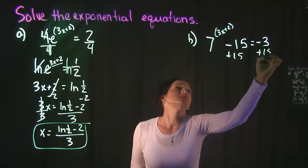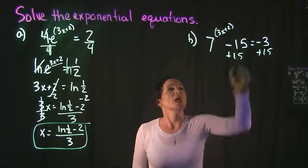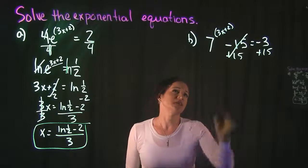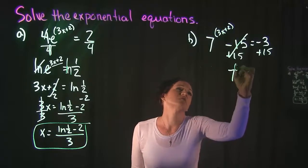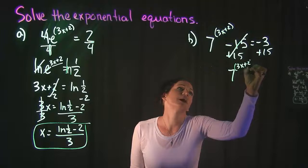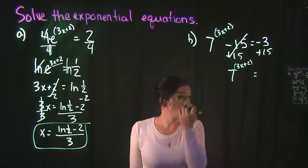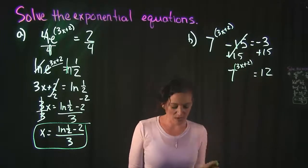So we're going to start by adding 15 on both sides. -15 plus 15 cancel out, leaving us with 7^(3x+2). And that equals -3 + 15, which is 12.